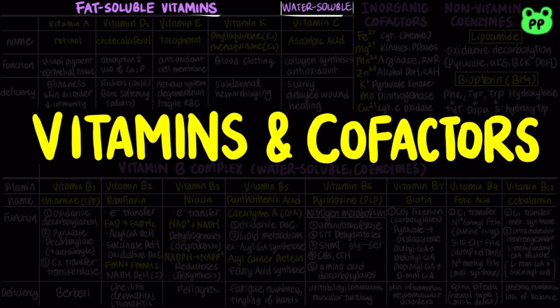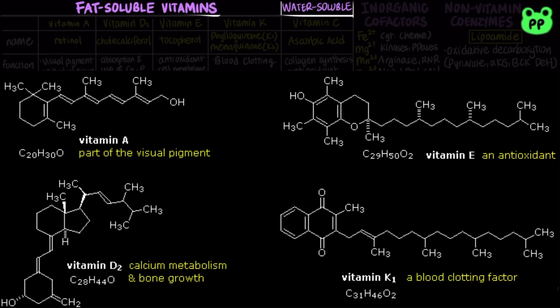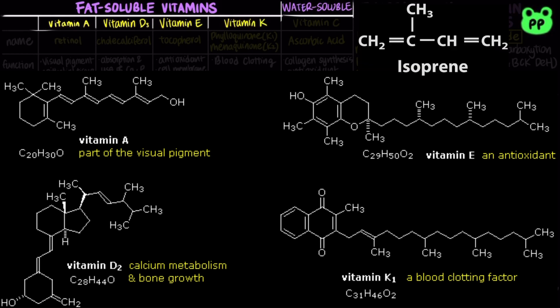Fat-soluble vitamins include vitamins A, D, E, and K, all of which are isoprenoid compounds synthesized by the condensation of multiple isoprene subunits.